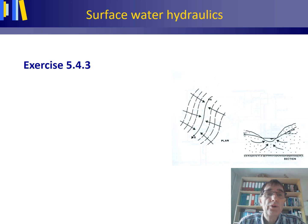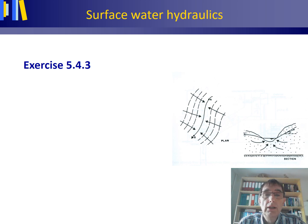Exercise 5.4.3 from the book Introduction to Physical Hydrology. To the right we see the plan view of an area where we have a river with an upstream measuring station A, where the discharge of the river is measured, and a downstream measuring station B, where also the discharge is measured. Indicated by arrows is the groundwater flow contribution to the channel reach AB.